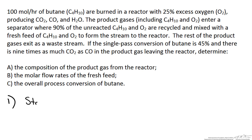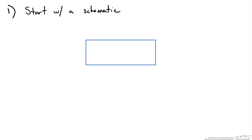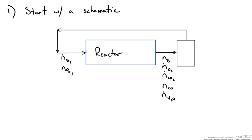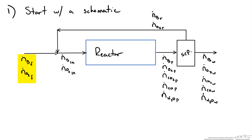The first place to start with any material balance is a schematic of our process. We have our reactor, and into it we have a mixture of butane and oxygen. The product stream leaving contains unreacted butane, unreacted oxygen, CO2, CO, and water. This enters our separator which takes 90% of the unreacted butane and oxygen and passes it back to a mixing point where it joins a fresh feed of butane and oxygen. So we have a feed stream mixed with a recycle stream of butane and oxygen that then enters our reactor.